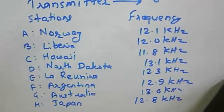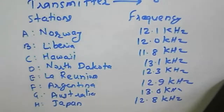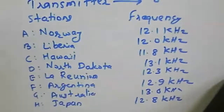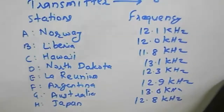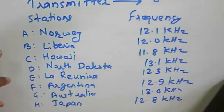Unlike LORAN, in the Omega system there is no master station and no secondary station. All stations are equal. Any navigator is free to use any station signal. Using time differences between received synchronized signals, lines of position are determined to find the observer's location.